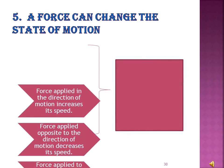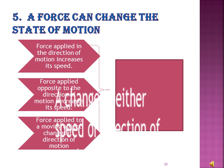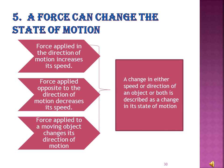A force can change the state of motion. Force applied in the direction of motion increases its speed. Force applied opposite to the direction of motion decreases its speed. Force applied to a moving object changes its direction of motion. All these changes — increase of speed, decrease of speed, and change of direction — are described as a change in the state of motion.